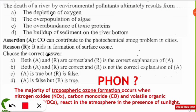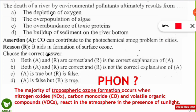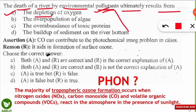All these questions today will be from environmental pollution, one of the very important topics. The first question: the death of a river by environmental pollutants ultimately results from which of the following? The correct option is option A — depletion of oxygen. When environmental pollutants enter the river, the oxygen level depletes, algae population grows, fishes die, and the river dies. So depletion of oxygen is the correct answer.